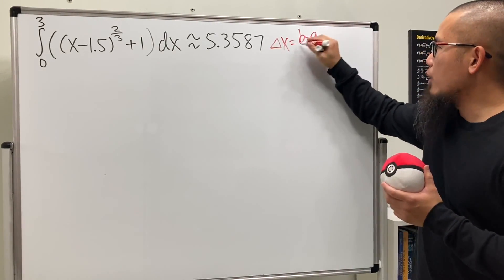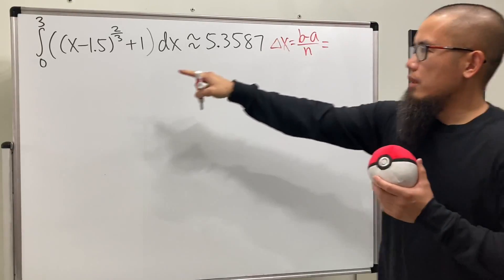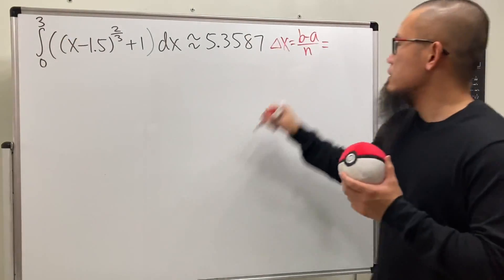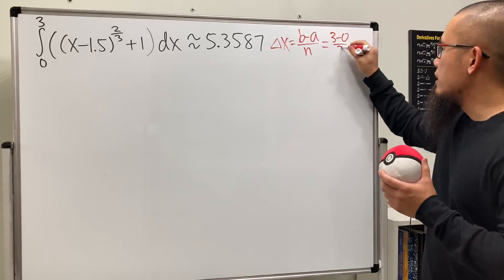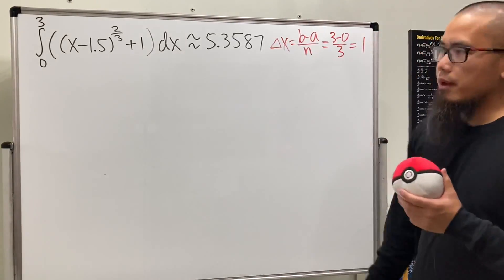Let's compute delta x, which is b minus a over n. Well, a is 0 and b is 3, so we have 3 minus 0 over n. We set it to be 3, so this is equal to 1.